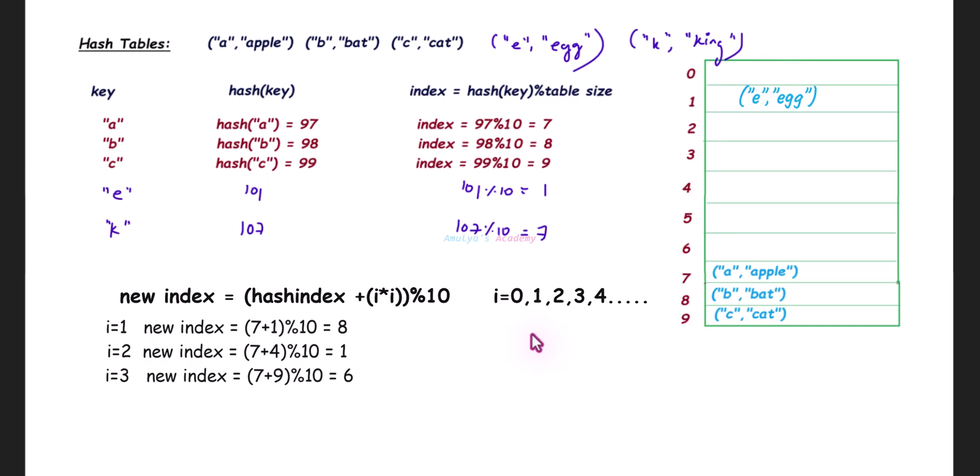Or you can use quadratic probing method. In that, you need to check the index using this formula. First check this slot, next check slot 1—it's not empty—next check slot 6, and insert the key-value pair.